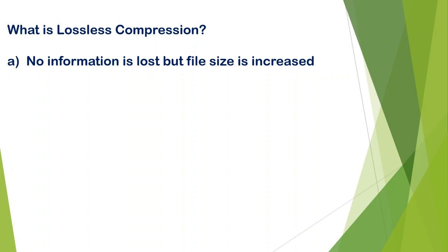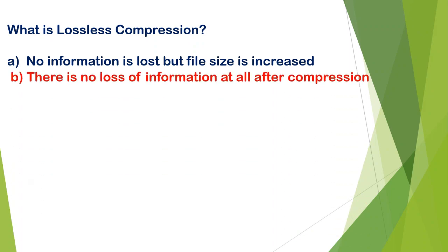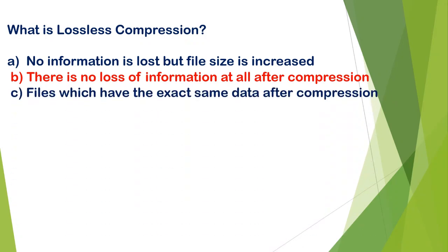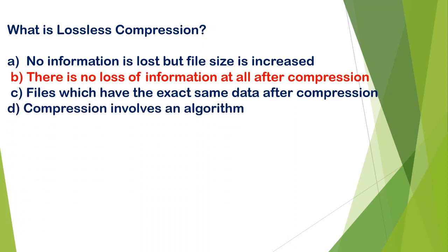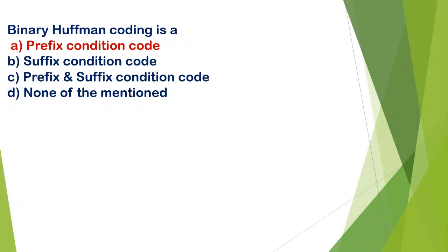What is lossless compression? A) no information is lost but file size is increased, B) there is no loss of information at all after compression, C) files which have the exact same data after compression involve an algorithm. The correct answer is B — there is no loss of information at all. Binary Huffman coding is A) a prefix condition code, B) suffix condition code, C) prefix and suffix condition code, D) none. The correct answer is A, prefix condition code.